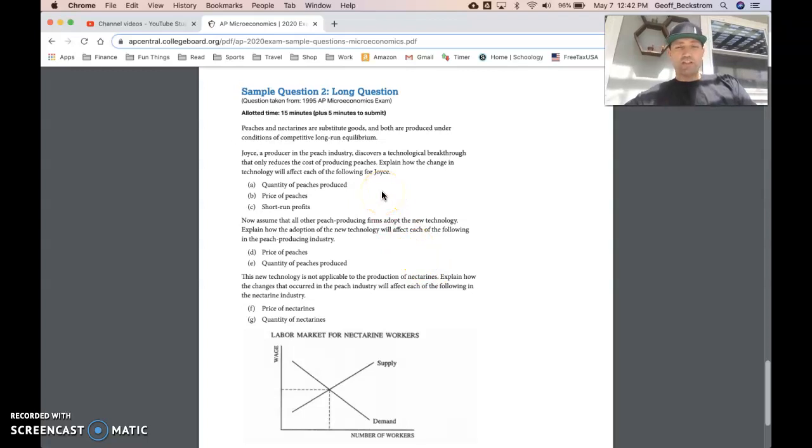All right, so we have peaches and nectarines are substitute goods. During reading time for this question, make sure that you're highlighting, underlining, et cetera, some key pieces like this part where it says substitute goods that's going to become important. Sometimes they'll tell you things like this that don't matter in the question just to kind of throw you off, but commonly all of that information is necessary. So don't panic if you don't feel like you incorporated every single piece of information in the question. Just trust your own analysis, but pay careful attention to every piece that they give you.